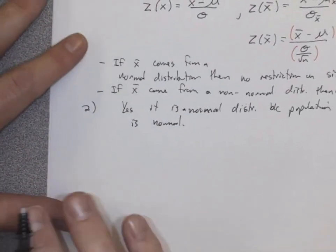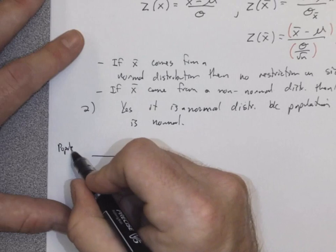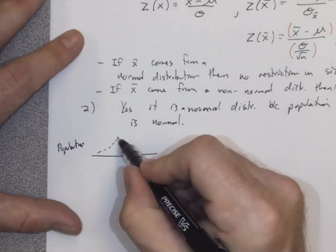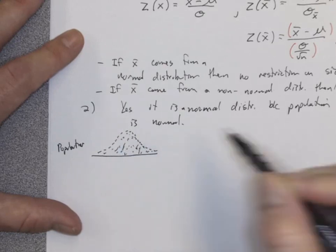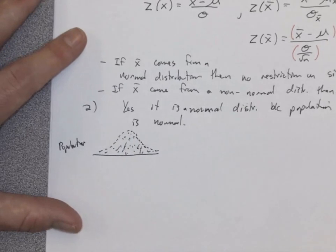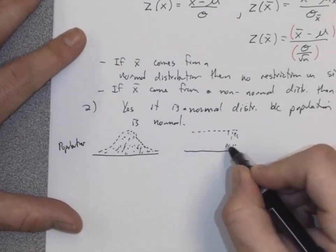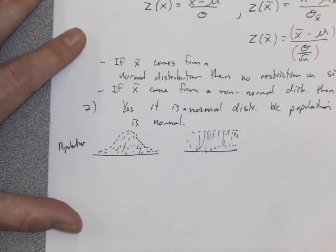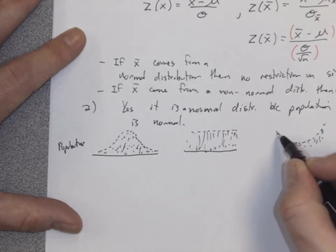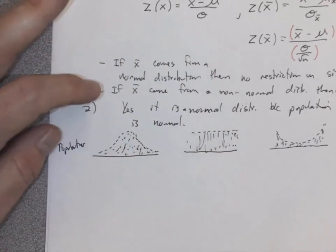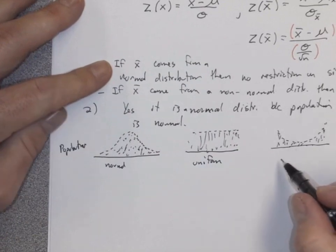Let's draw the picture we did last class. If the population has a normal distribution — a bell-shaped curve — and we take samples of size n, the sample means will also have a normal distribution. Notice the sample means distribution is a little skinnier, because the standard deviation of the sample means equals the original standard deviation divided by the square root of n. As n increases to 30, it gets even skinnier but stays bell-shaped.